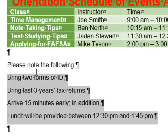Notice the extra gap between each line. That's because Word is not aware that these items are part of the same list. That's why we need to make them bullets, so Word knows they are part of the same list and will adjust the spacing between these lines accordingly.